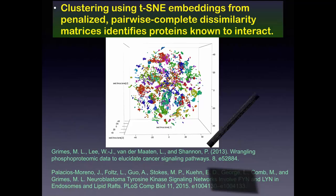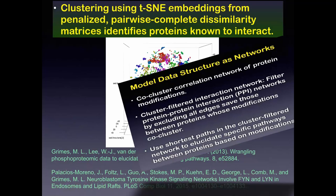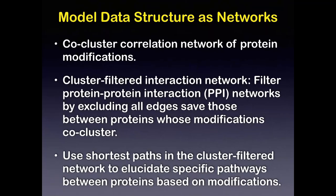I'd like to focus now on how we use these clusters to model data structure as networks. One approach is to make a co-cluster correlation network of protein modifications. Another is to use cluster-filtered interactions to filter protein interactions by excluding all edges except those between proteins whose modifications co-cluster. We can then use shortest path algorithms in the cluster-filtered network to look at specific pathways between proteins based on their modifications.